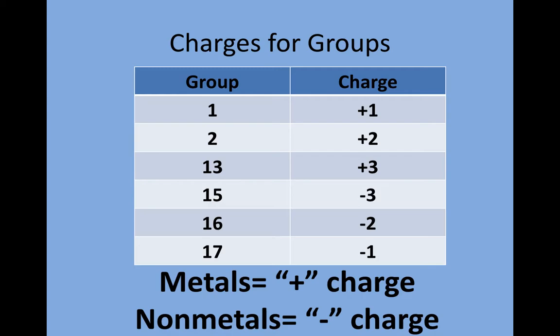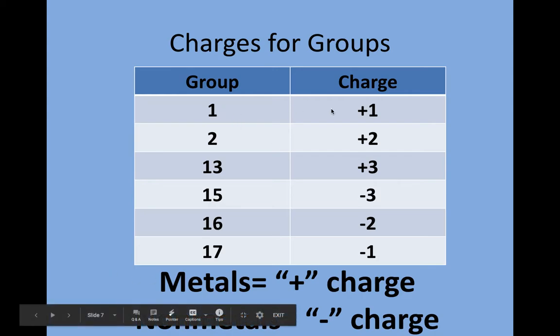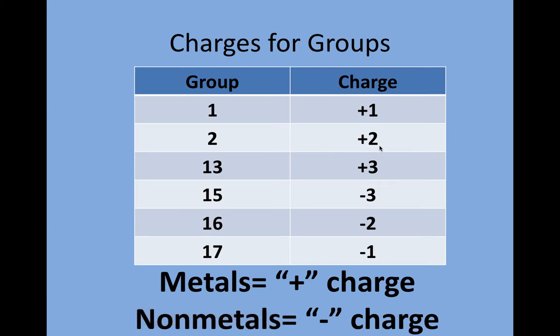Some things I want to refresh your memory. Anything in group one is going to have a positive one charge. Anything in group two is going to have a positive two charge, and anything in group three is going to have a positive three charge. The metals are on the left side of the periodic table, so groups one, two, and thirteen all have positive charges. Groups fifteen, sixteen, and seventeen are your non-metals — they gain electrons, so fifteen has a negative three charge, sixteen has a negative two, and seventeen has a negative one.